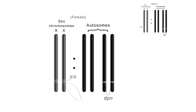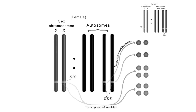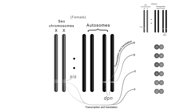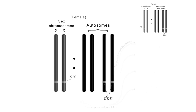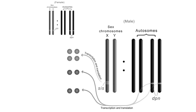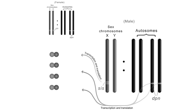In females, the expression of 2 copies of sisterless numerator genes, one from each X chromosome, results in excess sisterless protein subunits compared to the deadpan denominator protein subunits. This results in the formation of many numerator homodimers. The numerator homodimers are transcription factors that activate expression of the sex lethal gene, or SXL gene. In males, there is only one copy of each numerator gene, so most expressed sisterless subunits form heterodimers with denominator subunits. As a result, there are not enough numerator homodimers to activate SXL expression.